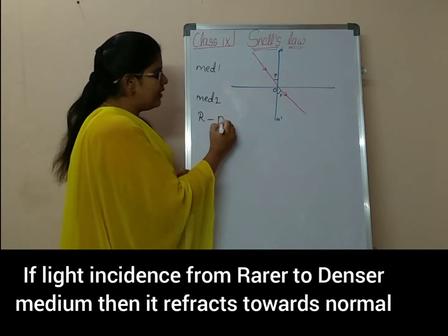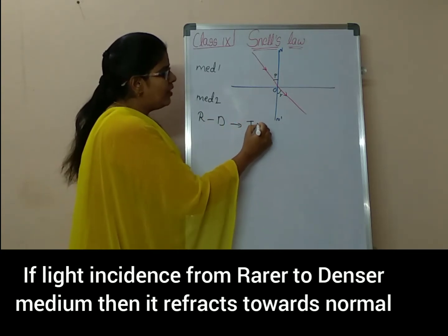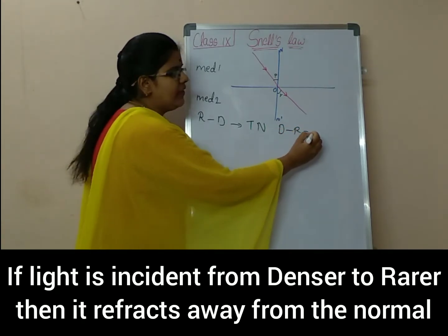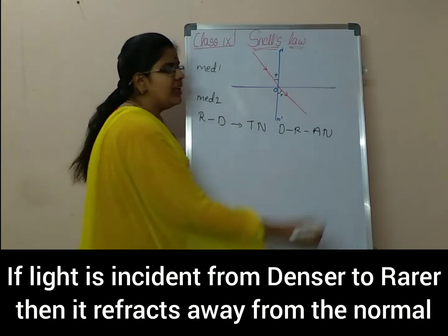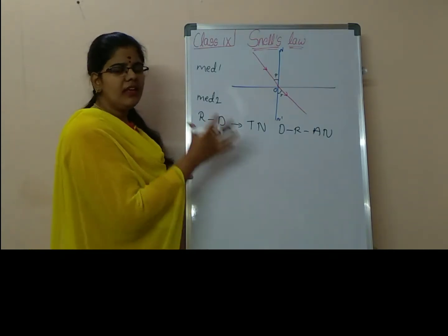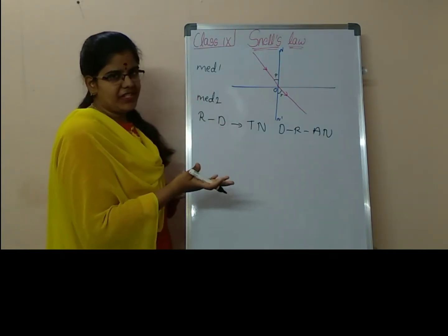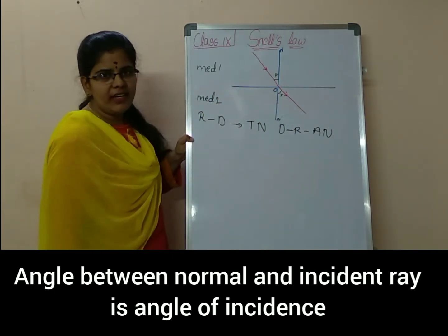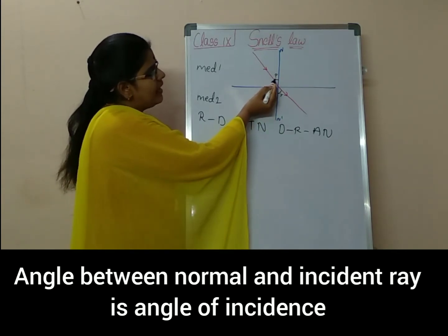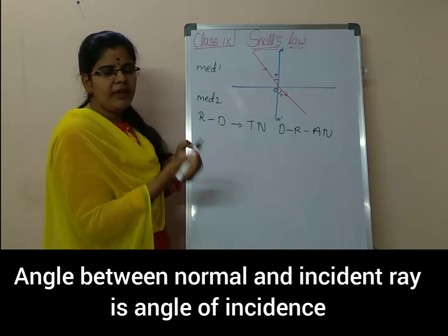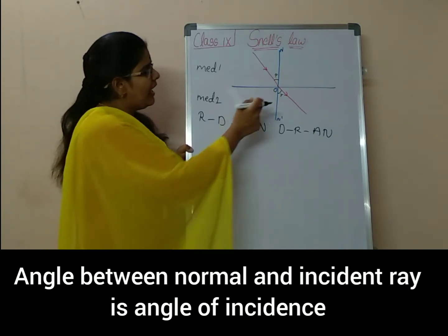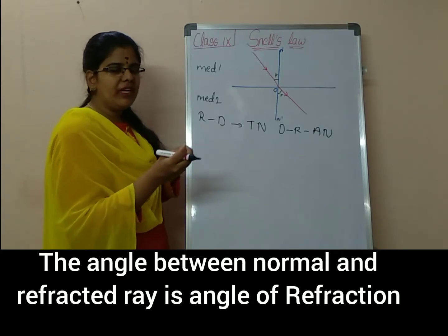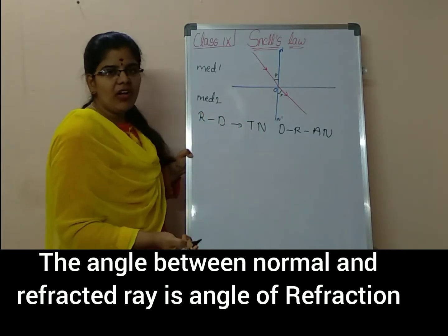It will be depending on rarer to denser or denser to rarer. If it is rarer to denser, then it will be refracting towards the normal. If it is from denser to rarer, then it will be refracting away from the normal. So this is the incident ray and this is the refracted ray. The angle made by the incident ray to the normal we call the angle of incidence, and the angle made by the refracted ray towards the normal is called the angle of refraction.